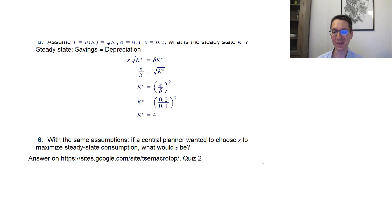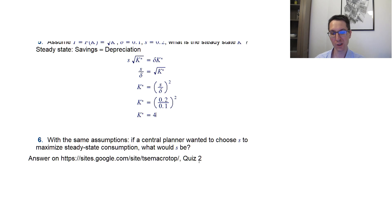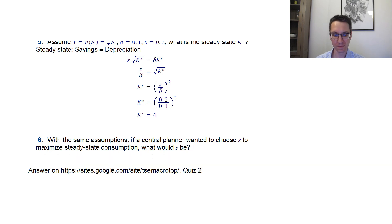Now the more difficult question six: if a central planner wanted to choose S to maximize steady state consumption, what would S be? Just reading this question you could already guess that question four — what happens to consumption in a new steady state — had an ambiguous answer, because there is actually an optimal savings rate. If people save too much they should reduce it; if too little they should increase it to maximize consumption.